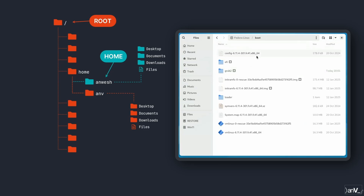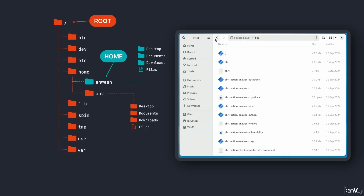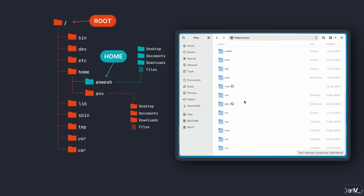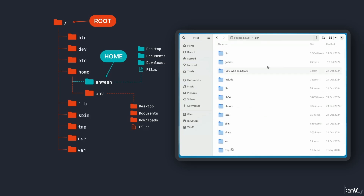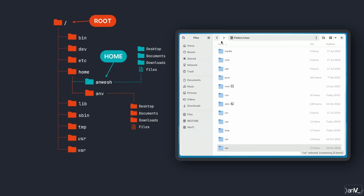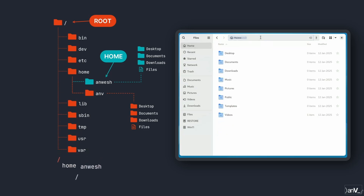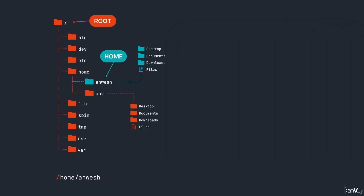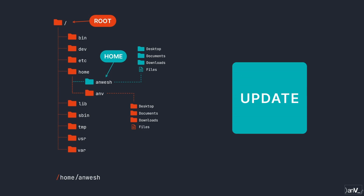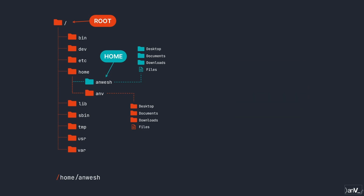These home directories are inside a main directory called root. It is the top-level directory denoted by the forward slash character, and it has many other directories along with home. The full path of the current user's home directory is like forward slash home slash and then the username. You can't access most directories without root privileges.